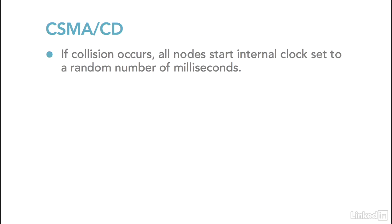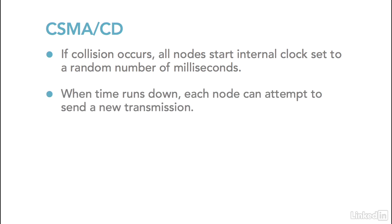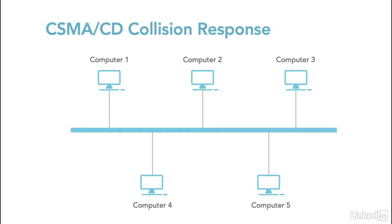If a collision does occur, all the nodes on the network will hear it and they'll start an internal clock set to a random number of milliseconds. Once the clock on a specific node runs down to zero, that node will attempt to send a packet again. This diagram illustrates what happens: a collision took place, and so a timer on each computer randomly generated a number of milliseconds. Each node has a different number of milliseconds on its clock, so as each clock runs down they attempt to send their packet, hopefully avoiding further collisions.